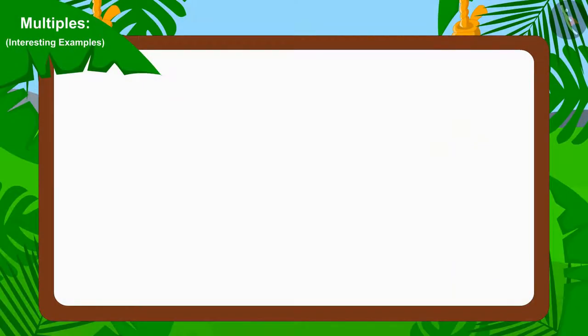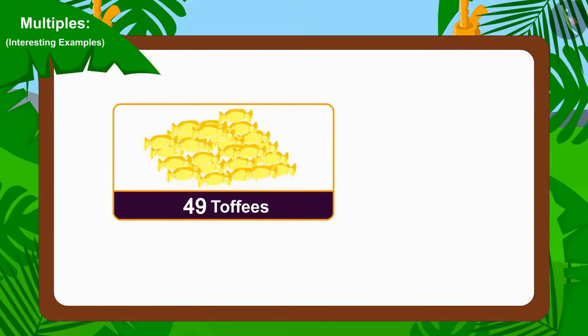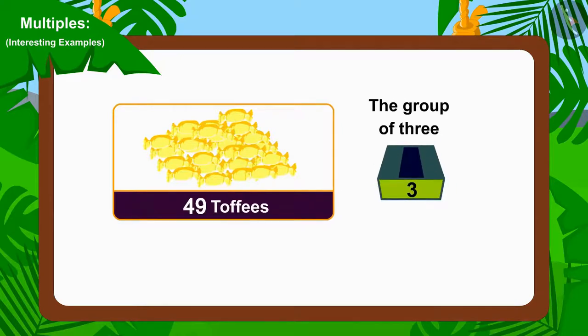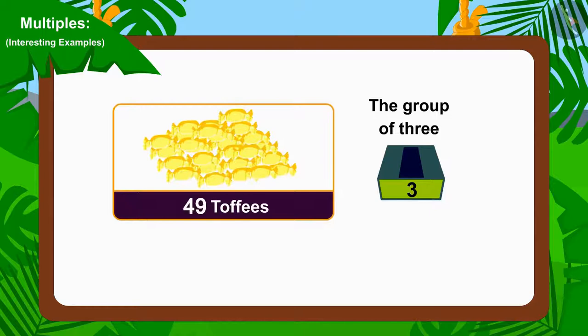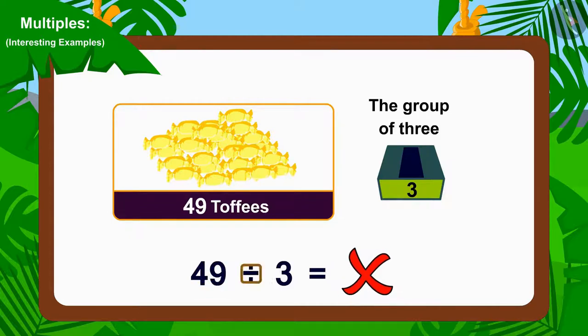Let's first try to divide these toffees into groups of 3 and see if there are any toffees left. How can we easily do this? Correct! We just have to see if we can divide 49 by 3. Can we do that? No! We cannot divide 49 by 3.